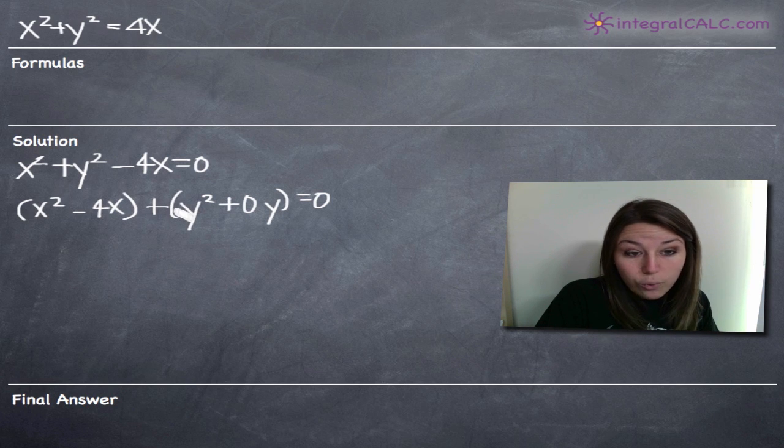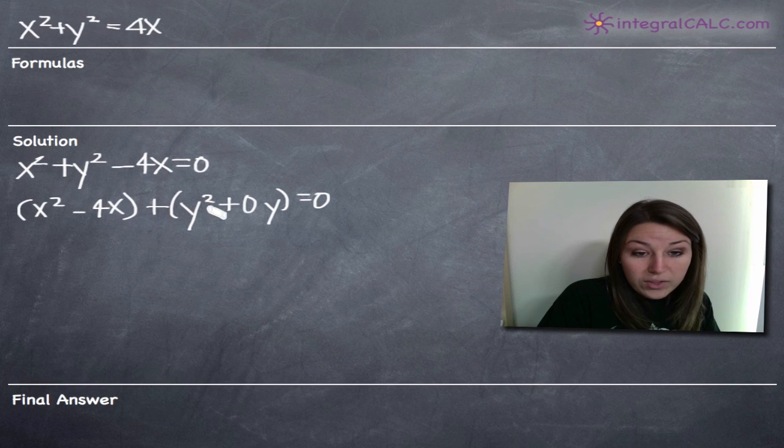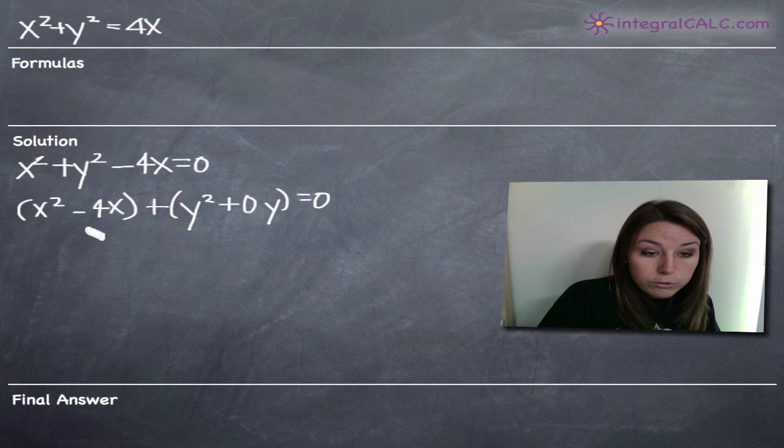The reason that I added in this plus zero y term is because now that we've gotten this far, we need to complete the square with both the x terms and the y terms. If you're having trouble with completing the square, you can go look at that section on my website, but for now, we'll kind of breeze through it. Remember that to complete the square, we take the coefficient on the first degree term.